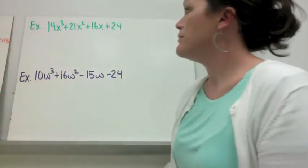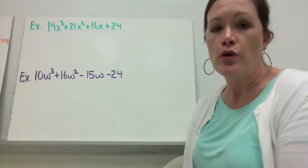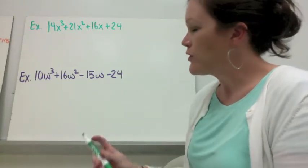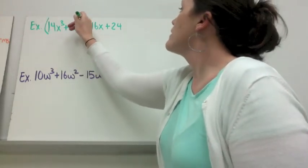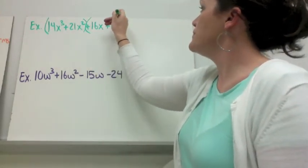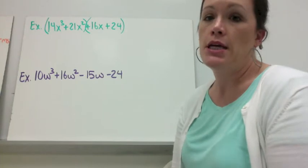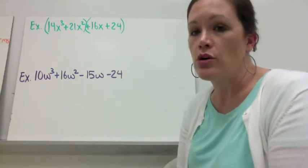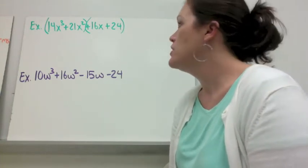For example one, we have a polynomial of four terms. I'm going to group the first two terms and the last two terms using parentheses. Then we look at the first two terms and we take out their greatest common factor.